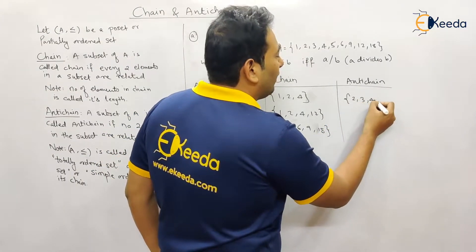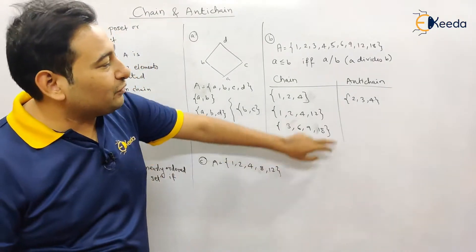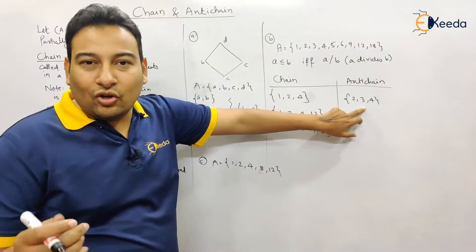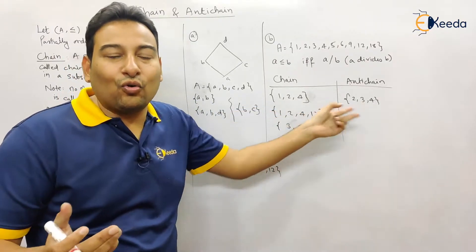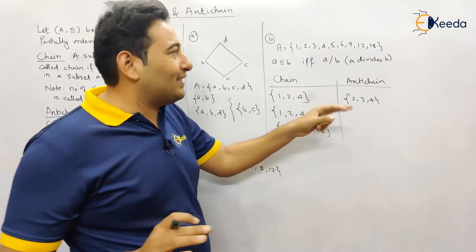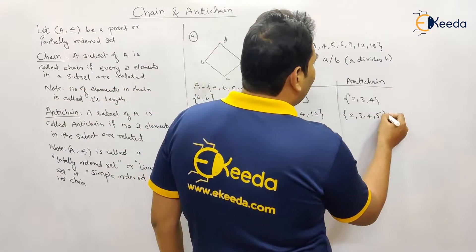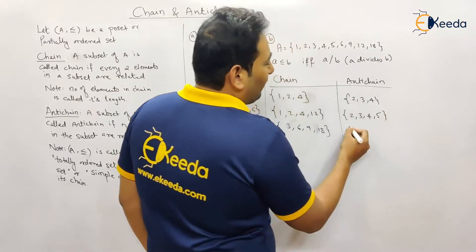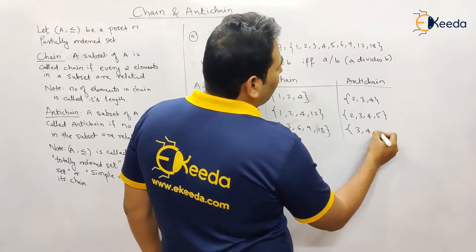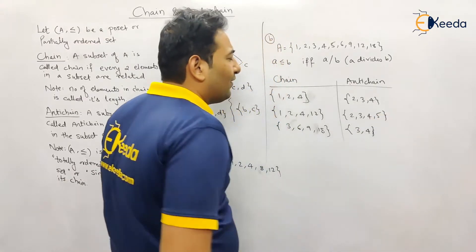Now what about antichains? Consider {2, 3, 4}: pick any two elements — two does not divide three, three does not divide four, no element divides the other — therefore it's an antichain. You can add one more element and it will still be an antichain. Similarly, {3, 4} is also an example of an antichain.